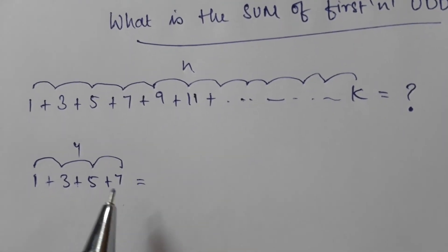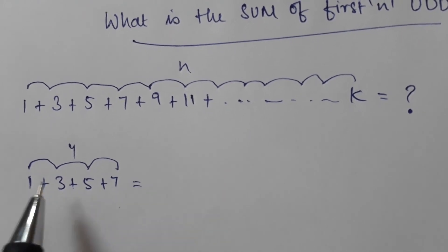Let us try to approach it with a simple example: 1 plus 3 plus 5 plus 7, which has 4 odd numbers.